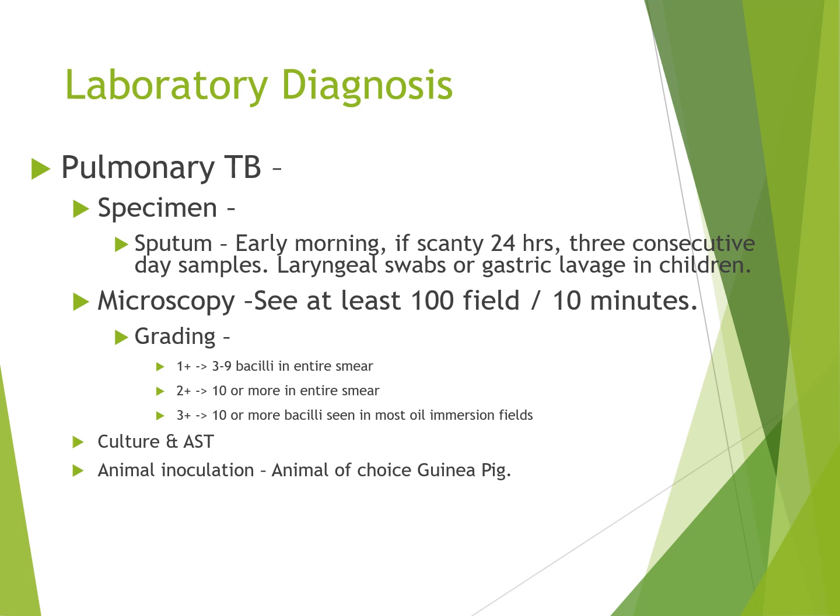For diagnosis of pulmonary TB, the specimen is sputum collected early morning; if scanty, 24-hour collection or 3 consecutive day samples are used, with laryngeal swabs or gastric lavage in children. During microscopy, you should see at least 100 fields per 10 minutes. A grading system is in place: 1 to 3 bacilli in an entire smear, 4 to 9 bacilli in an entire smear, and 10 or more bacilli in individual fields. Culture, antibiotic sensitivity, and animal inoculation use the guinea pig as the animal of choice.